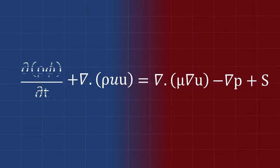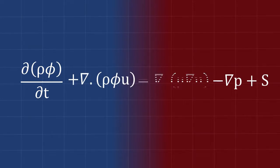Now if we replace u by a term Phi, then we will see an equation of a form which is known as the general transport equation.